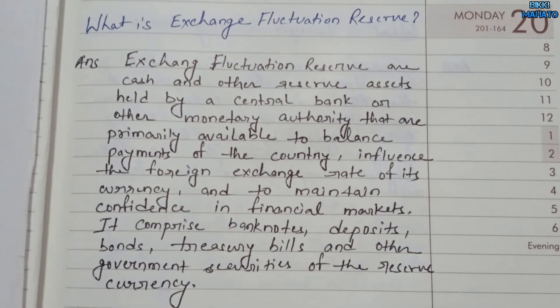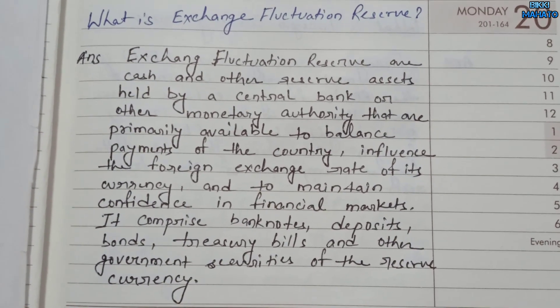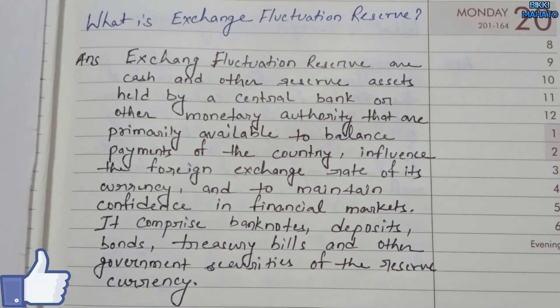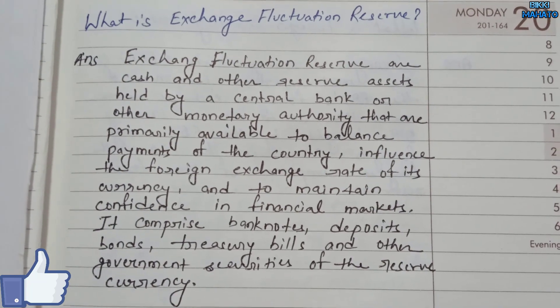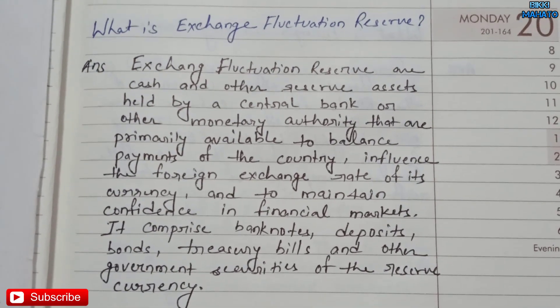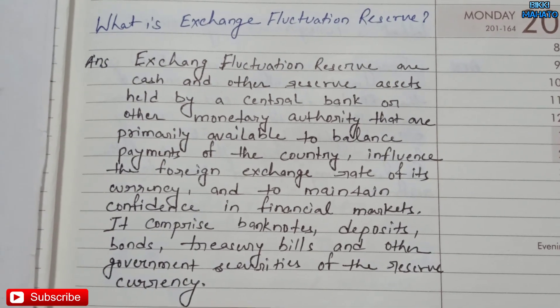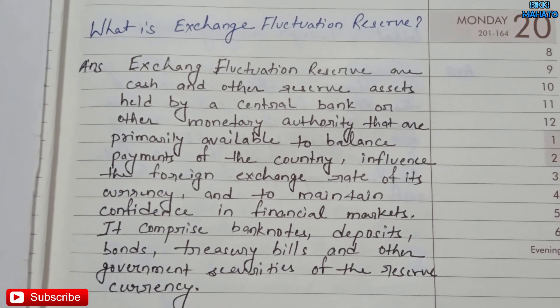It comprises bank notes, deposits, bonds, treasury bills, and other government securities of the reserve currency. This is exchange fluctuation reserve.